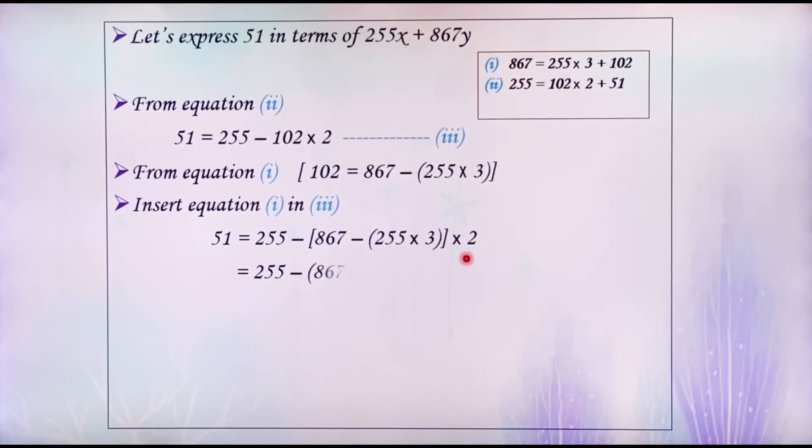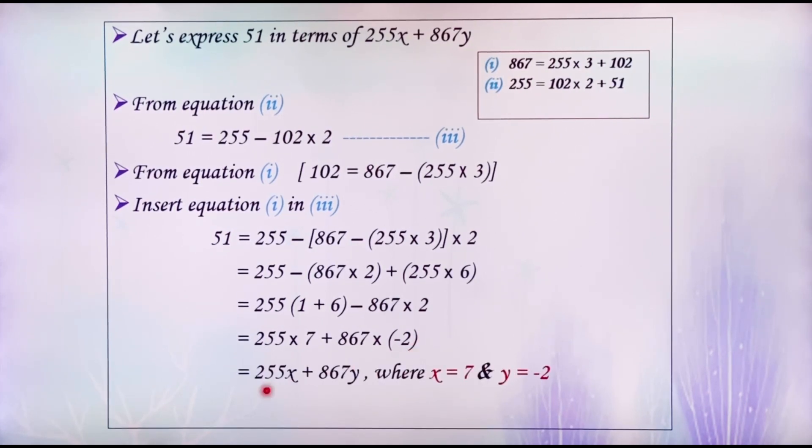Now, open the bracket. Then, we get 51 equals 255 minus 867 into 2 plus 255 into 6. Taking the common factor of 255 from first and last term, we get 255 into (1 plus 6) minus 867 into 2. That is equal to 255 into 7 minus 867 into 2, which equals 255 into 7 plus 867 into minus 2. This can be written as 255x plus 867y, where x equals 7 and y equals minus 2. This is the linear combination of 255 and 867.